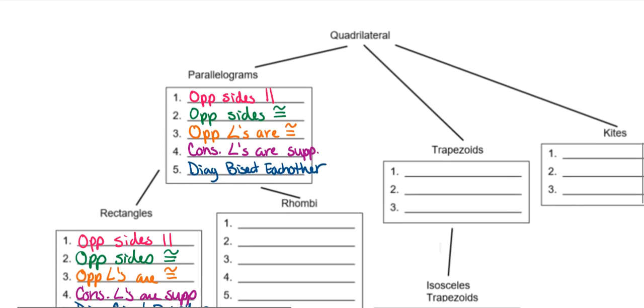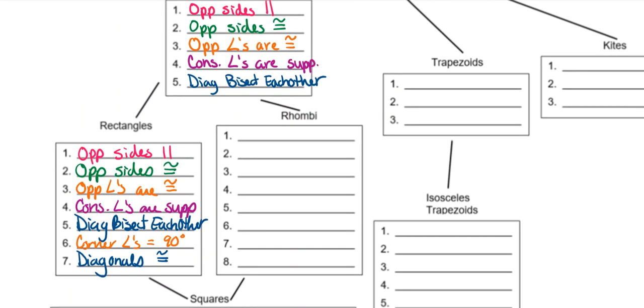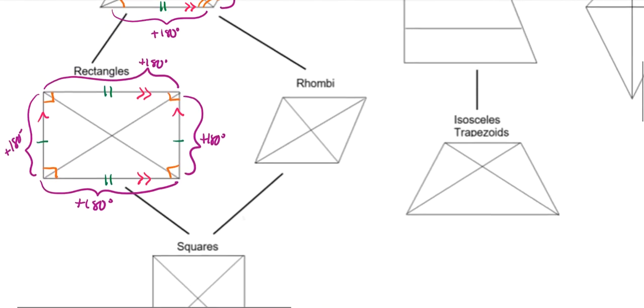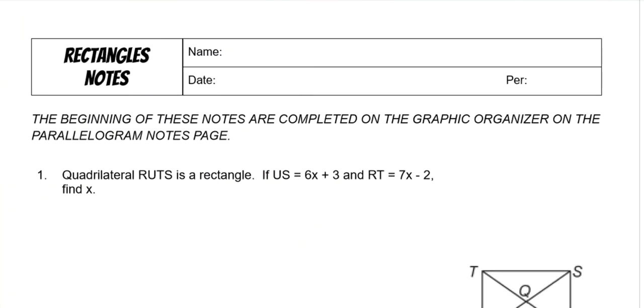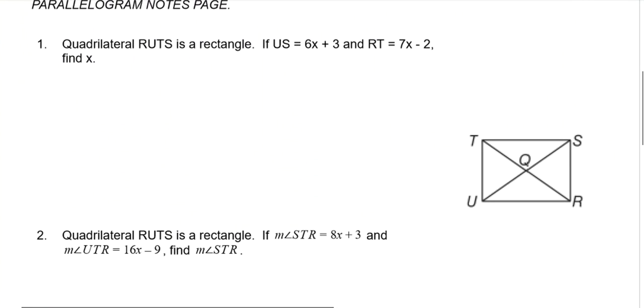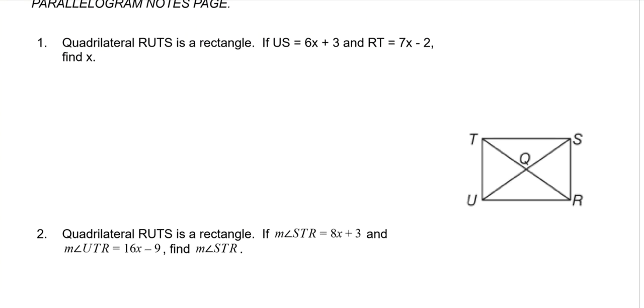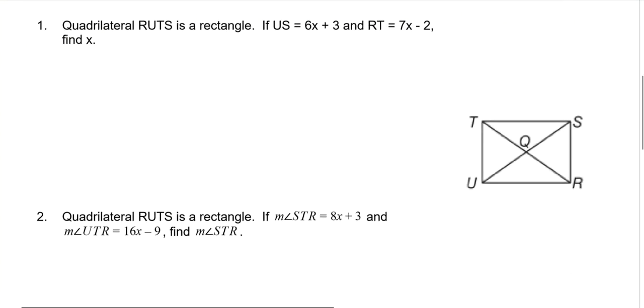And then diagonals bisect each other, but also the diagonals are congruent. So what that means is each of these little pieces will be the exact same length. They're not going to change. So those are our new rectangle properties. Now we need to go to our actual rectangle notes. We're going to work some examples.